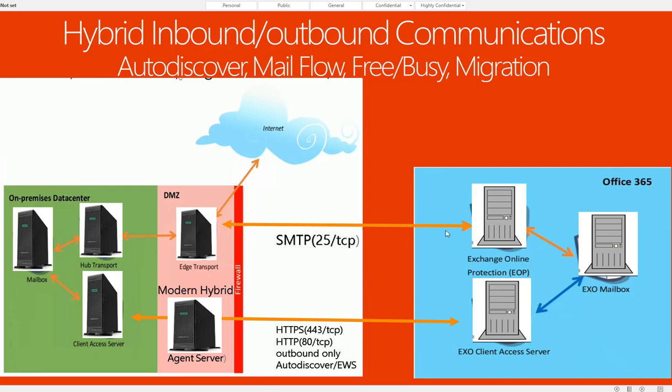The hybrid agent registers a custom URL for the tenant. That URL is then used by the org relationship and the intra-org connector in the mailbox. It then routes requests from the tenant to on-prem using this URL, which is only accessible from Exchange Online.